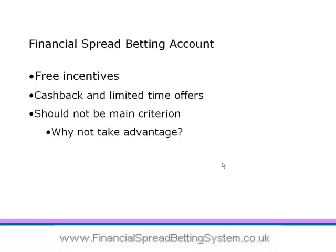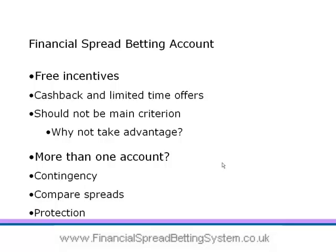Increased competition has brought a lot of incentives for you to open accounts: cashbacks, tight spreads for limited time periods, even wine and champagne. It shouldn't be your criterion for a long-term account, but if you already have an account, why not open a second and take advantage of these offers? Another reason to open a second account is contingency — what if you wanted to make a trade and your primary account is down? You can also compare quotes from two different accounts and go with the best one. Also, the government protects the first £50,000 of your account, so if you've got more than that, think about spreading it across multiple accounts. Good luck in finding your financial spread betting account — thank you.